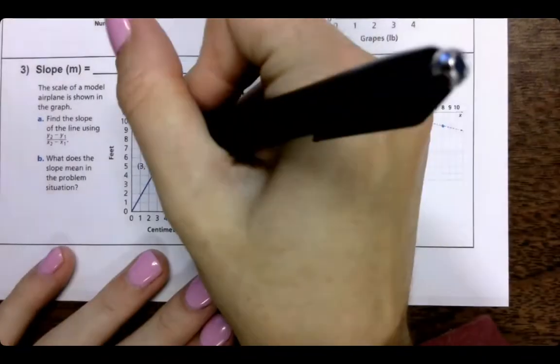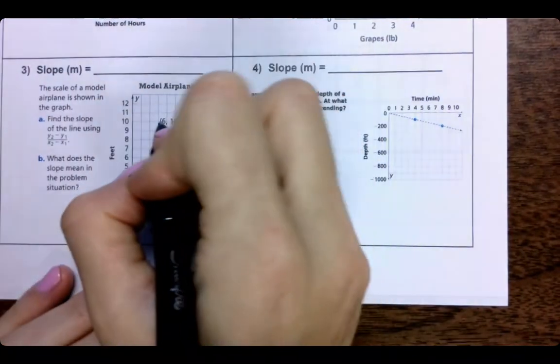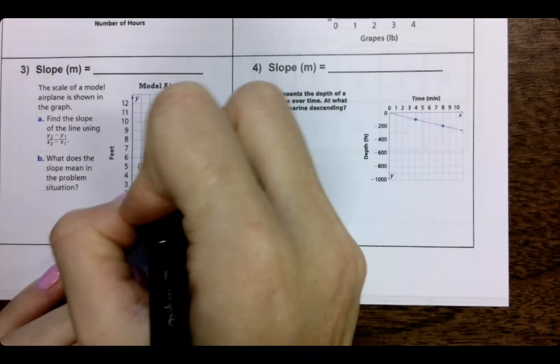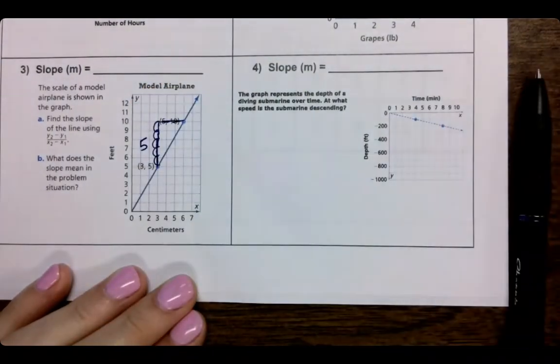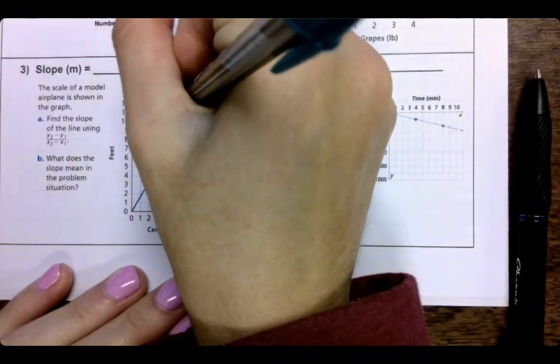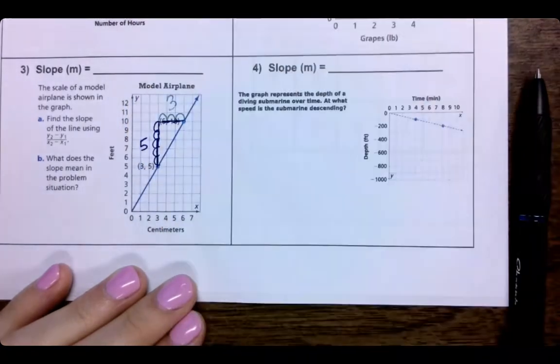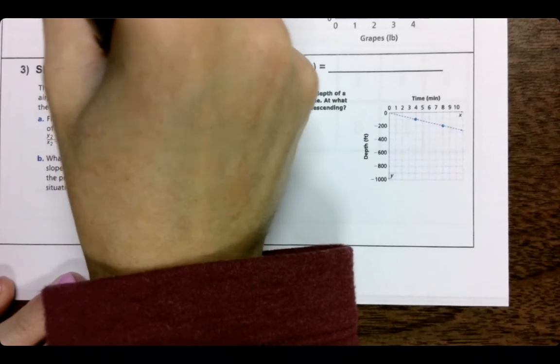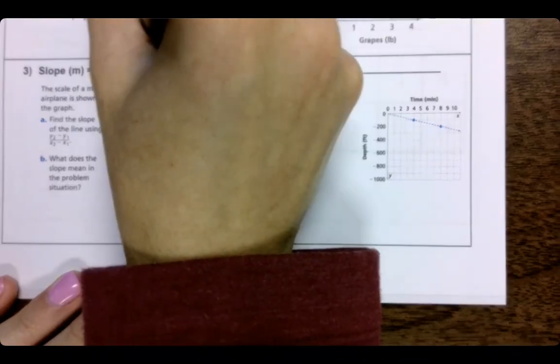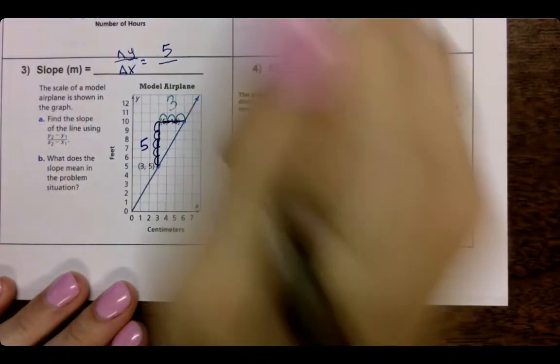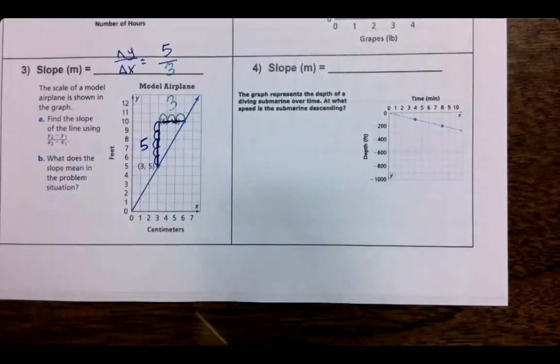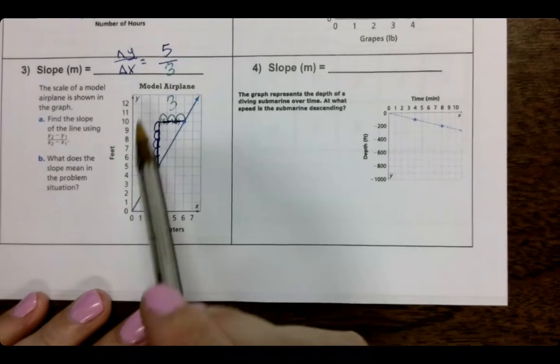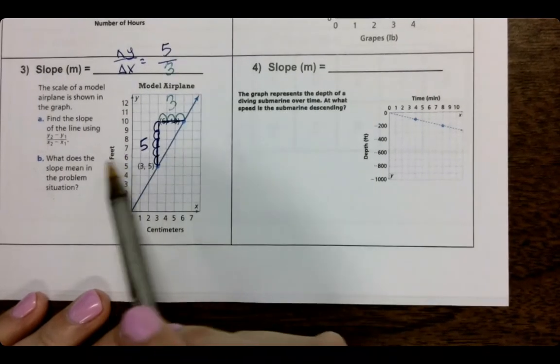Welcome back. So this one, one, two, three, four, and five going by one. So we get five. One, two, three going by one. So it is three. So it is five over three. And then it does say, what does the slope mean? So that means it is going up five feet.